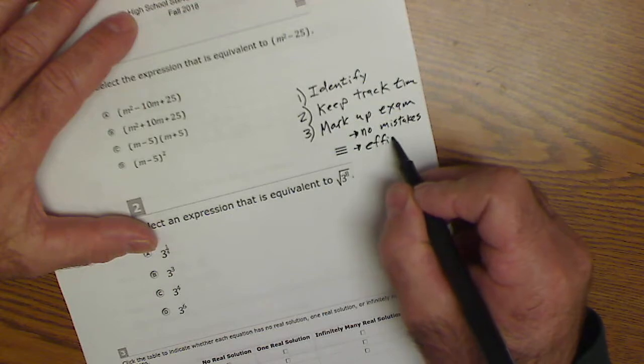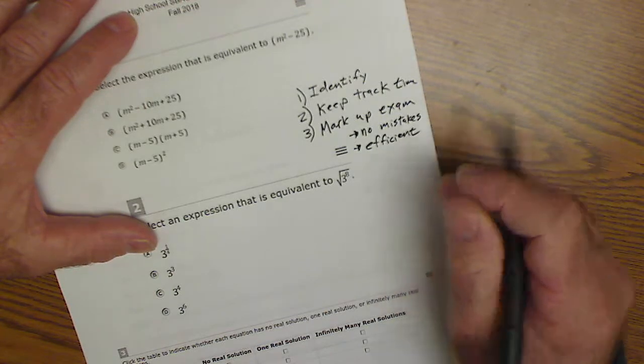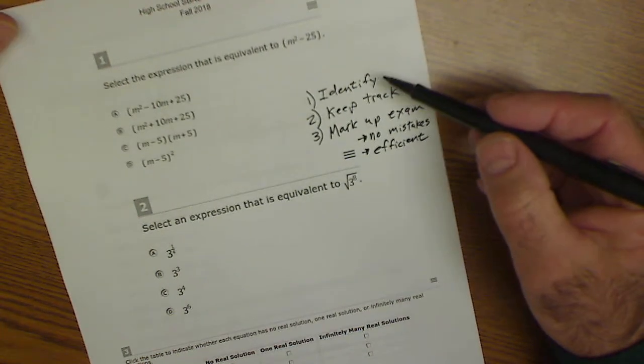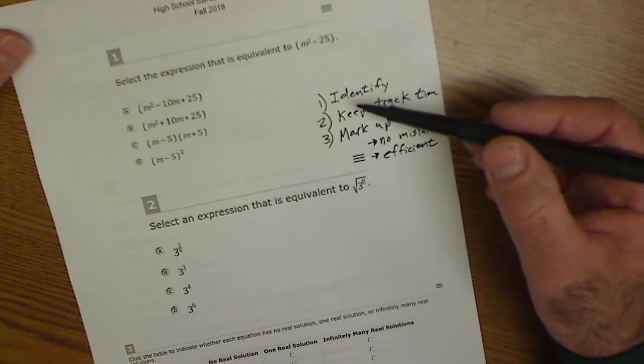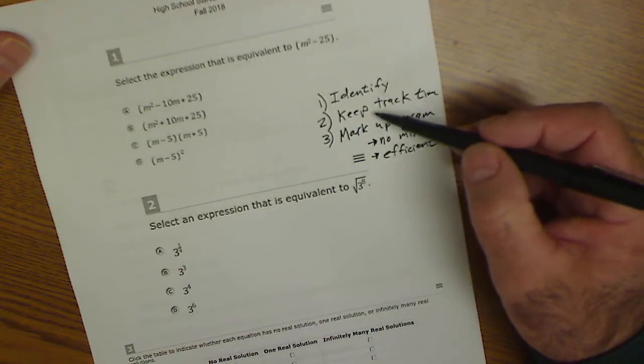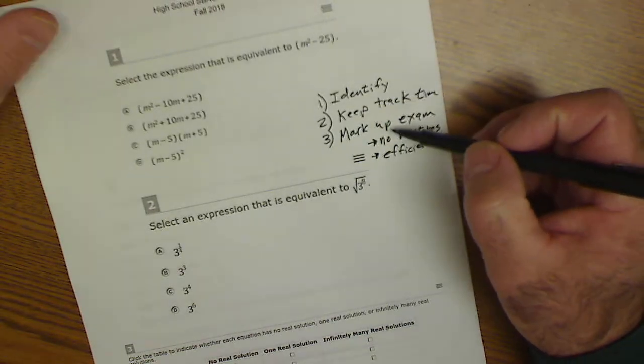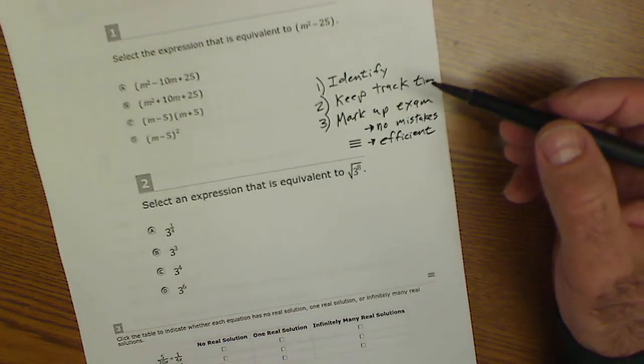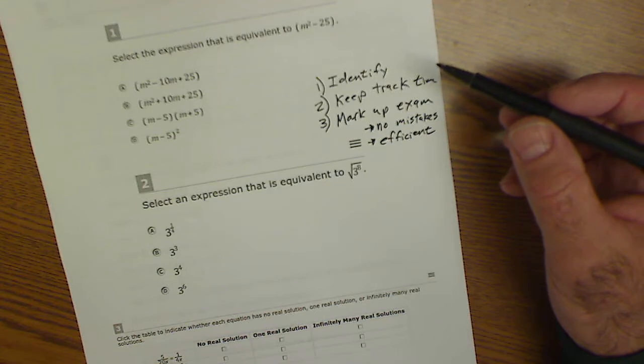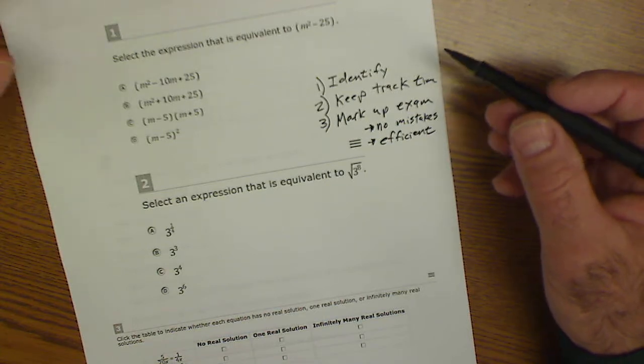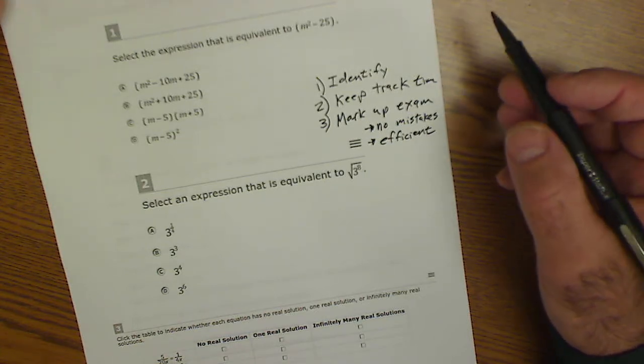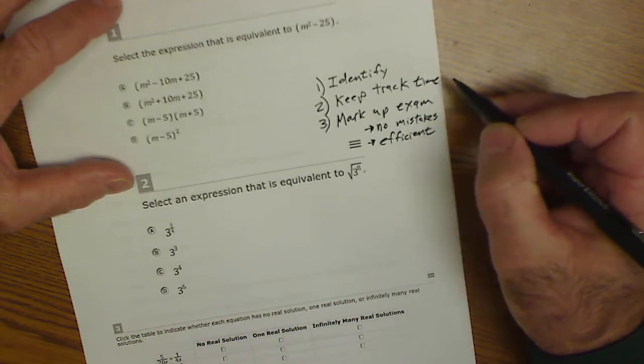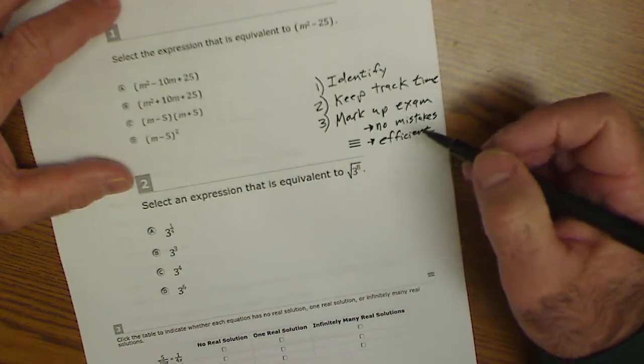So it's more efficient when you mark it up if you come back and check. So those are the three strategies you should work on: identifying what they're asking, keeping track of time, pacing yourself well, and mark up the exam. That's not just this exam. It is actually every standardized math exam, whether it's the SAT or whether it's your contractor's exam. Those are all key test-taking strategies.